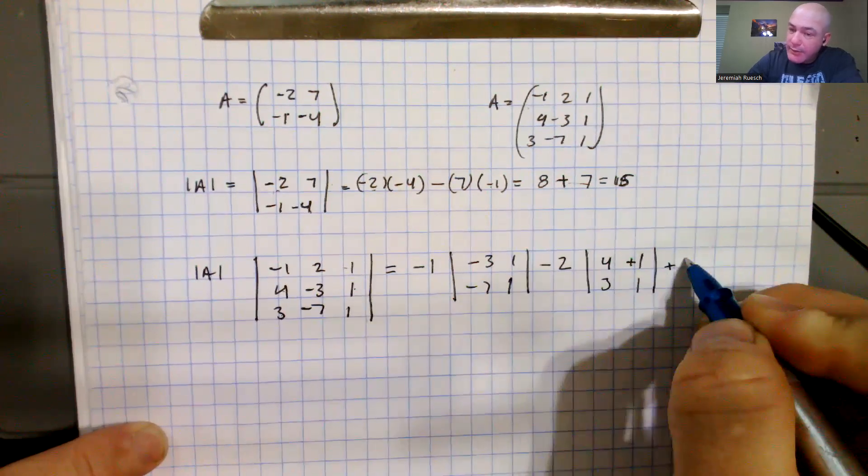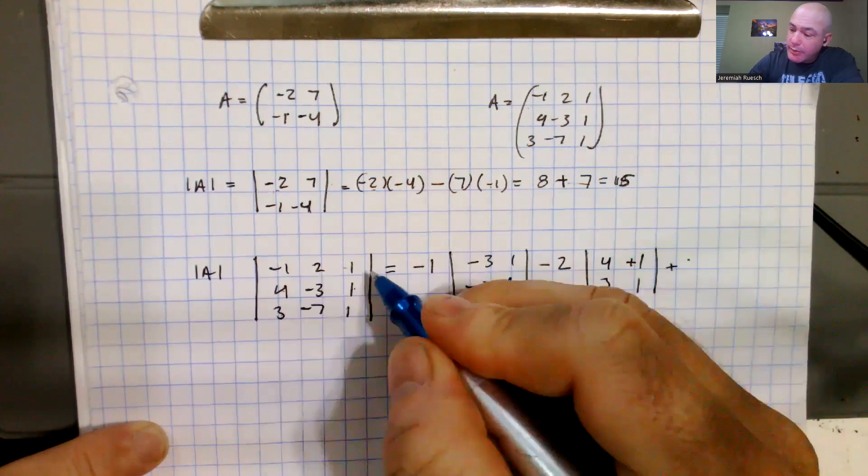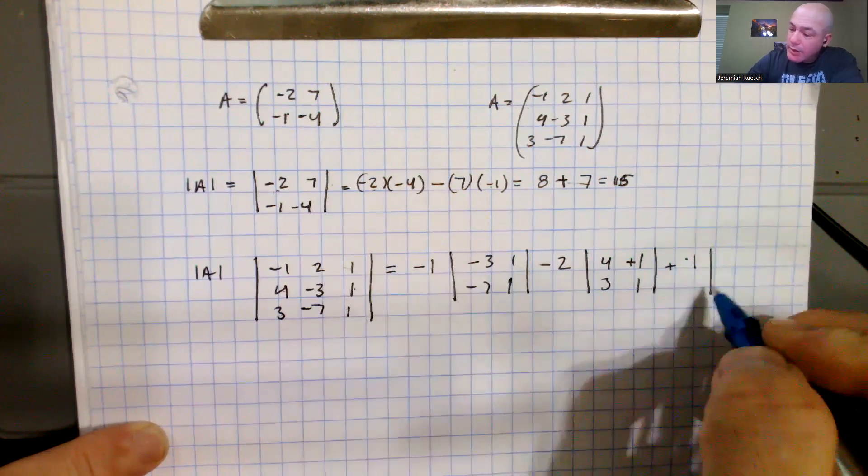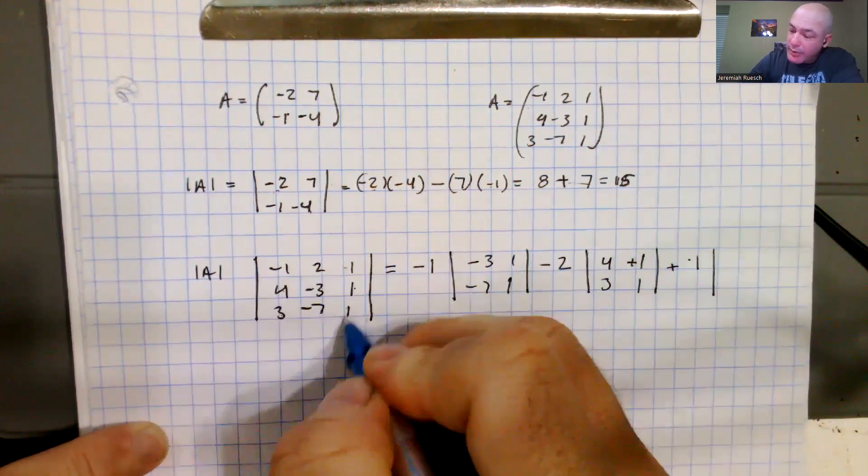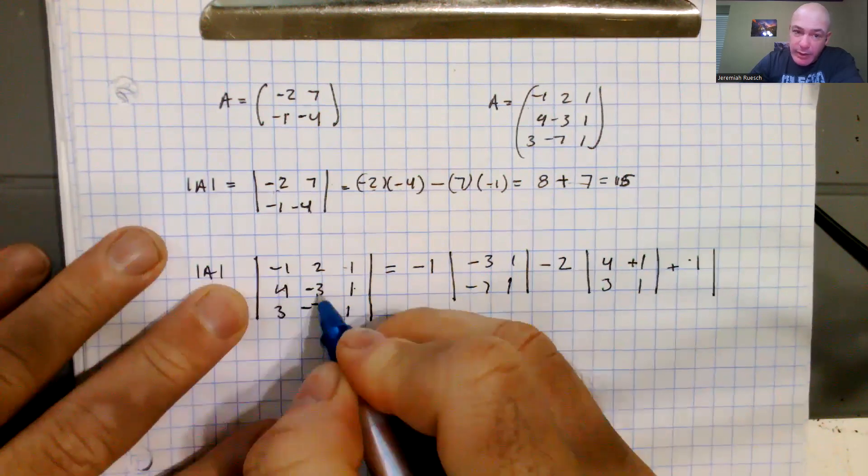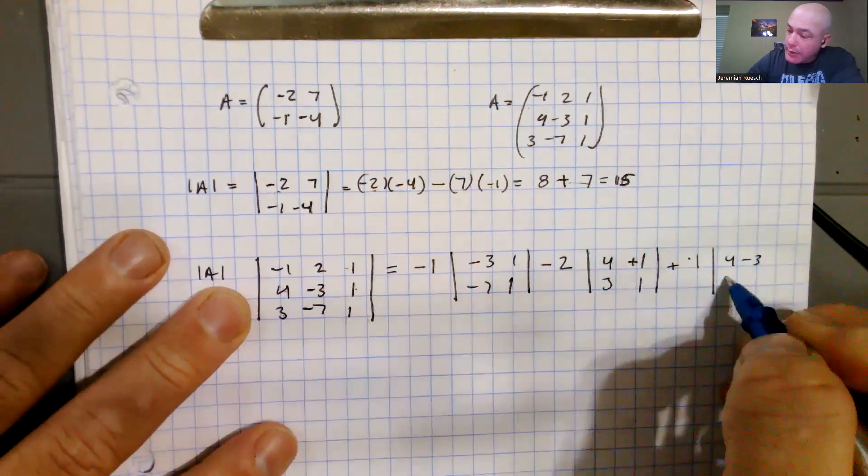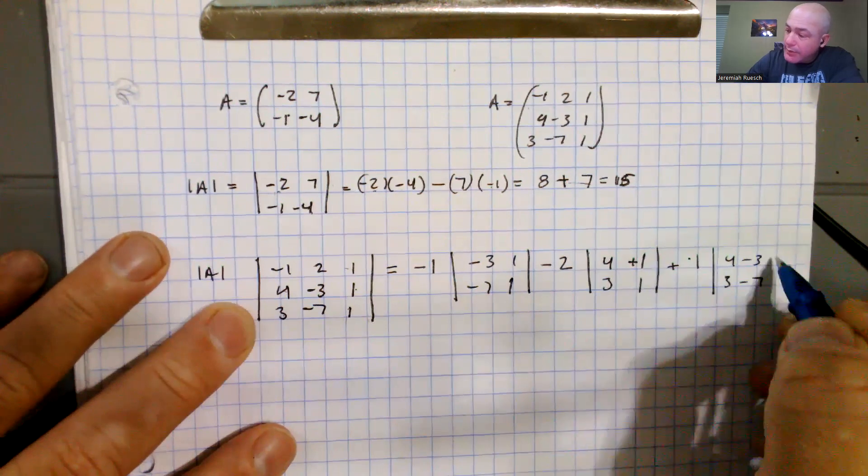Okay, and then last but not least, we're going to add to that. And we're going along the top row here, so this is going to be a 1 times this row and this column. And so we have this little submatrix right here. 4, negative 3, 3, negative 7.